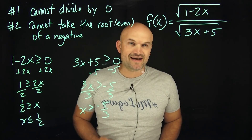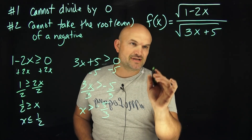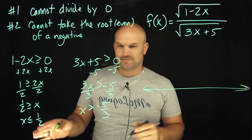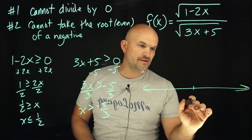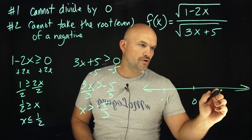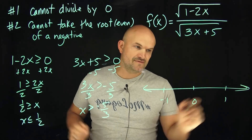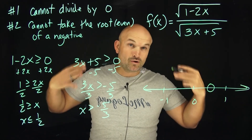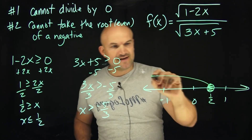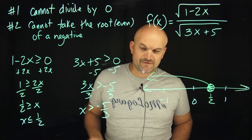Now comes the fun part of identifying what this domain is going to look like. I like to create a nice number line and plot these points. Let's give ourselves some bearings — here's zero, negative one, and positive one. I have x has to be less than or equal to one half, so one half would be somewhere in here. Less than or equal to means one half is contained, and that's going to be all values to the left. Then x has to be greater than or equal to negative five thirds, which is larger than negative one, somewhere over here.